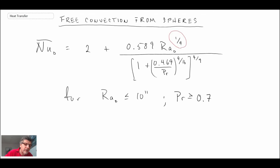We saw with the power of 1/4th, that typically indicated that the correlation was for laminar flow. When we look here, 10 to the 11th, that's close to 10 to the 9th that we had for the flat plate.